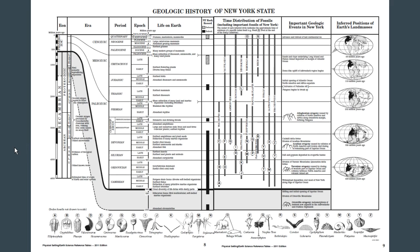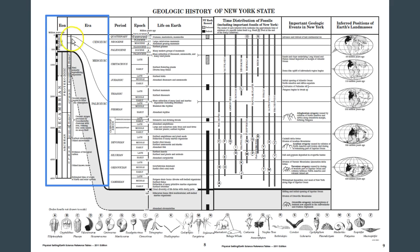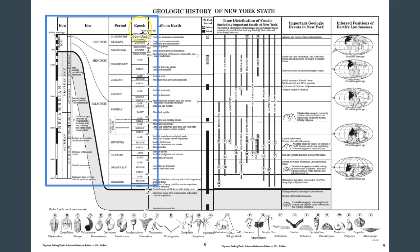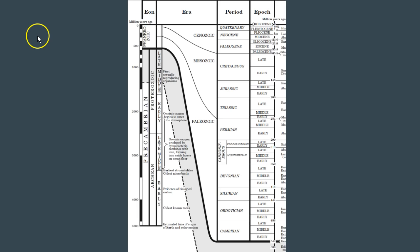Next we're going to break down the Phanerozoic eon, which is broken down into eras. The Phanerozoic is broken down into the Cenozoic era, the Mesozoic era, and the Paleozoic era. Now we're going to break down our era into periods and epochs — or some might say epochs, which sounds like a weird animal.